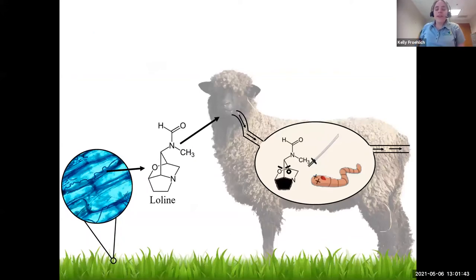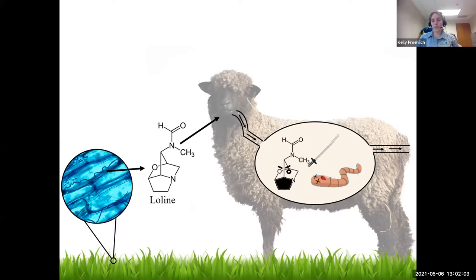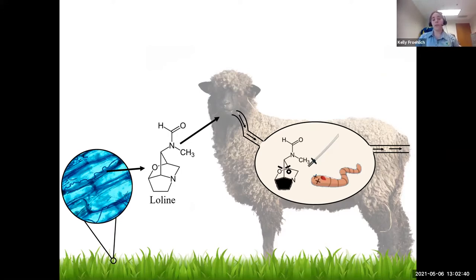I recently finished my PhD last year. The focus of my PhD was looking at loline, a secondary metabolite found in a lot of fescue-type grasses, how it was metabolized in sheep, and whether it had any effects on internal parasites. I also have a flock of my own sheep, so I know some of the problems that come with raising small ruminants. I'm not a vet, so any recommendations you should definitely always check with your vet and work with them on developing a parasite management plan for your flock.